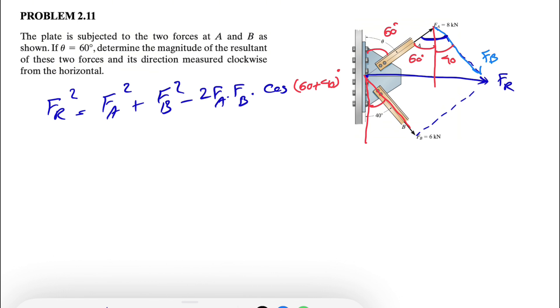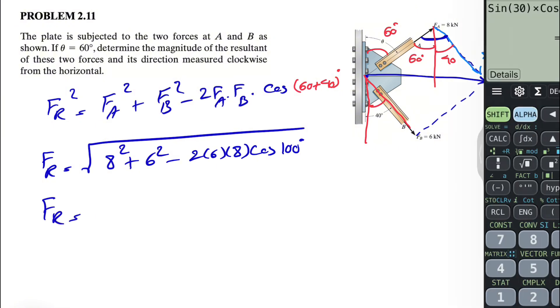So let's just figure this out. FR in here would be the square root of what we have on the right side. So we have FA squared, which is 8 kilonewtons. So 8 squared plus 6 squared is our FB minus 2 times 6 times 8 times cosine of 100 degrees. So let's just figure out this value.